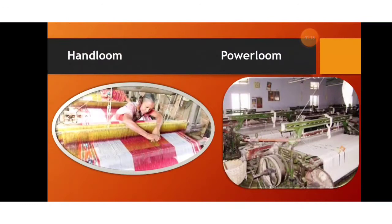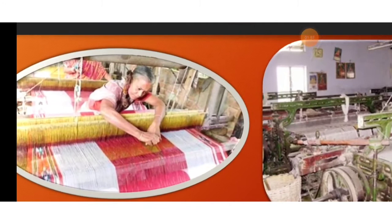You can see the picture of a hand loom and a power loom. A hand loom is worked with your hands, and a power loom works with the help of machines and electricity. The threads are arranged on the loom, and you can see the lady busy arranging the threads close to each other.